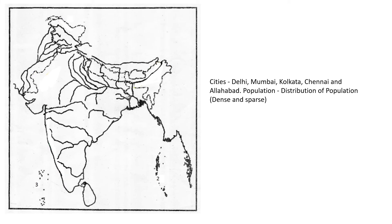Now let's look at the cities. We will start from Mumbai — Mumbai is on the coast, you should touch the coast area. The next one is Chennai — these are coastal cities, so I have taken them first. They should be on the coast; they should touch the coast.